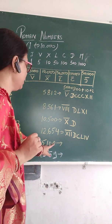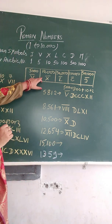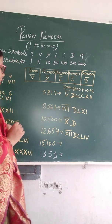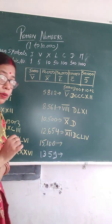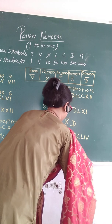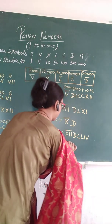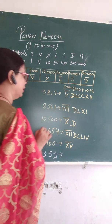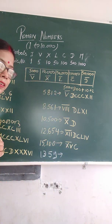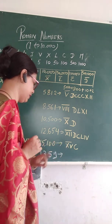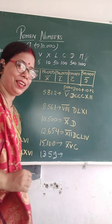Fifteen thousand, one hundred, fifteen. Fifteen thousand: XV with a bar on top. One hundred: C — that's 6 hundred. Fifteen is X and V. So 15115 is X̄VCXV. And 1000, 300, 50, 9 — write these down.